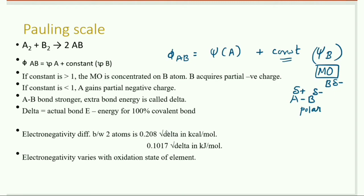If the constant c is less than 1, the molecular orbital will be concentrated on the A atom. So A acquires a partial negative charge and B acquires a partial positive charge. In this case the bond is also a polar bond.